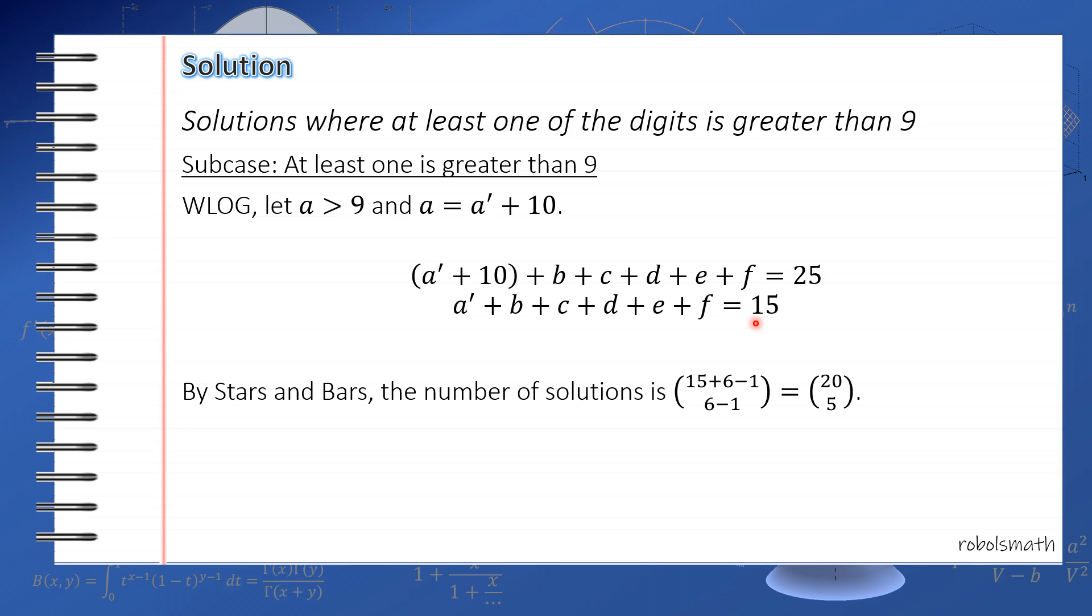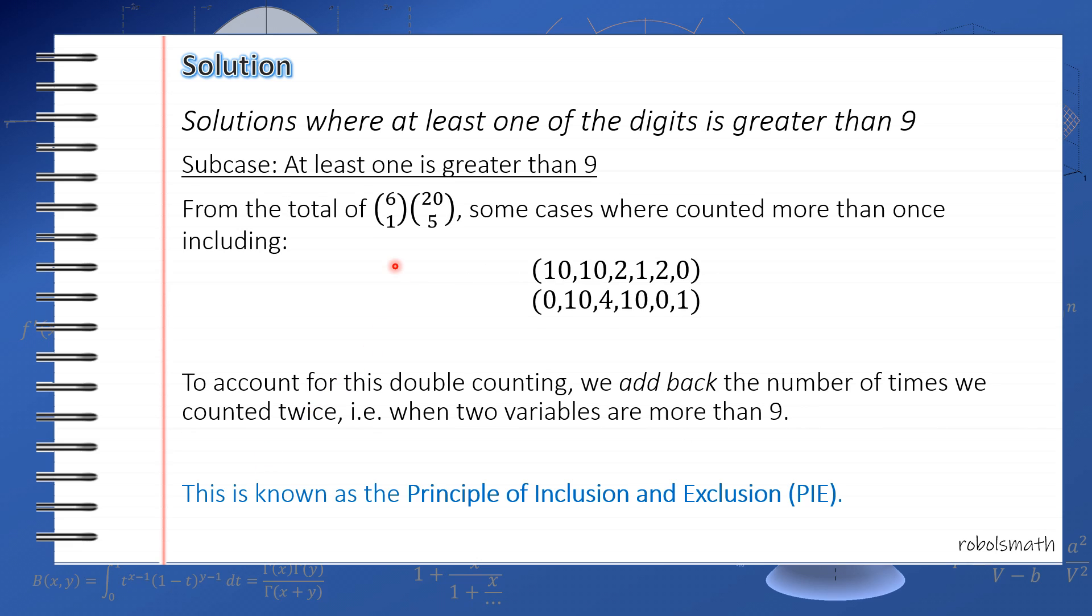Now since any of a, b, c, d, e, and f can be greater than 9, then the total number of cases is 6 taken 1 times 20 taken 5. 6 taken 1 because there are 6 variables and you're choosing 1. So any of them can be greater than 9. That's why we have this multiplier here.